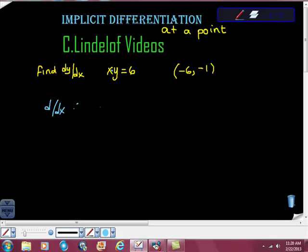That means I'm going to take d/dx of xy and d/dx of 6. d/dx of 6 is 0, right? The derivative of this horizontal line is 0. So now we have this.